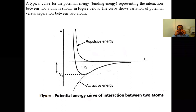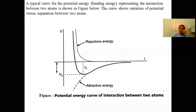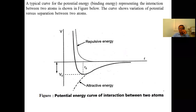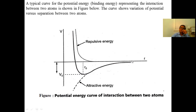At a particular separation there is attractive force. If we try to minimize the separation further, there is a repulsive force. There is a certain distance R₀ where there is no attractive force and no repulsive force, and at this point the potential energy is V₀, which is the minimum potential energy. If we increase the distance beyond R₀, the potential energy gradually decreases and approaches zero as R approaches infinity.